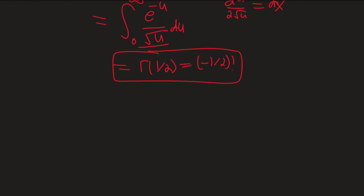So we're going to have our big circle, and we're going to be integrating like this — this is just the standard keyhole contour we've used before. We'll name the parts: integration along the top path will be gamma one, integration along the bottom path is gamma two, and the small circle there is going to be gamma three.